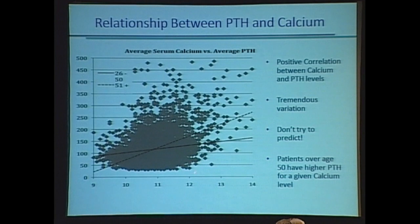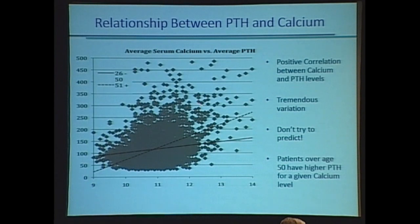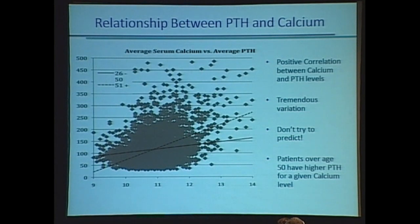We see people struggle with this all the time. A patient's calcium is 11.8, 12.1 — measured again it's 10.9 — they're all high, but their PTH is only 50 to 60. A lot of endocrinologists struggle with that, saying it doesn't make sense: if their calcium is 12, their PTH should be 300. You can't do that. Don't try to predict. If their parathyroid hormone level is anything but less than 25, that's basically our cutoff when evaluating people. It's extremely variable — it's a scattergram.